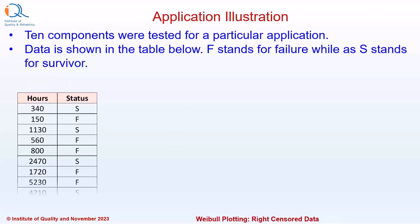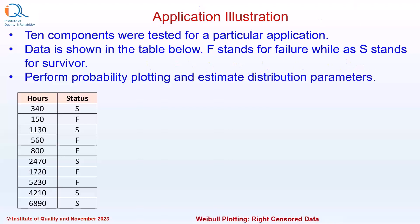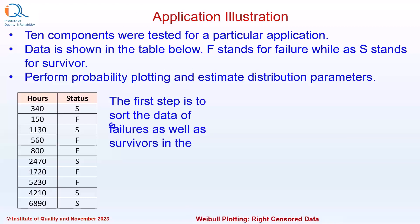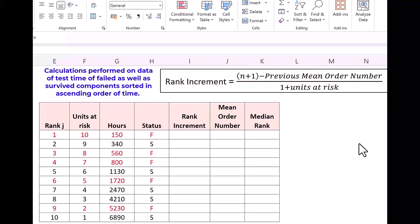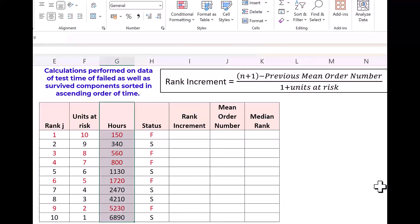We will explain the procedure with an application illustration. Ten components were tested for a particular application. The data is shown in the table — F stands for failure while S stands for survivor. Perform probability plotting and estimate distribution parameters. The first step is to sort the data of failures as well as survivors in ascending order, shown in the next table. I have added the data in ascending order here, along with rank J from 1 to 10.